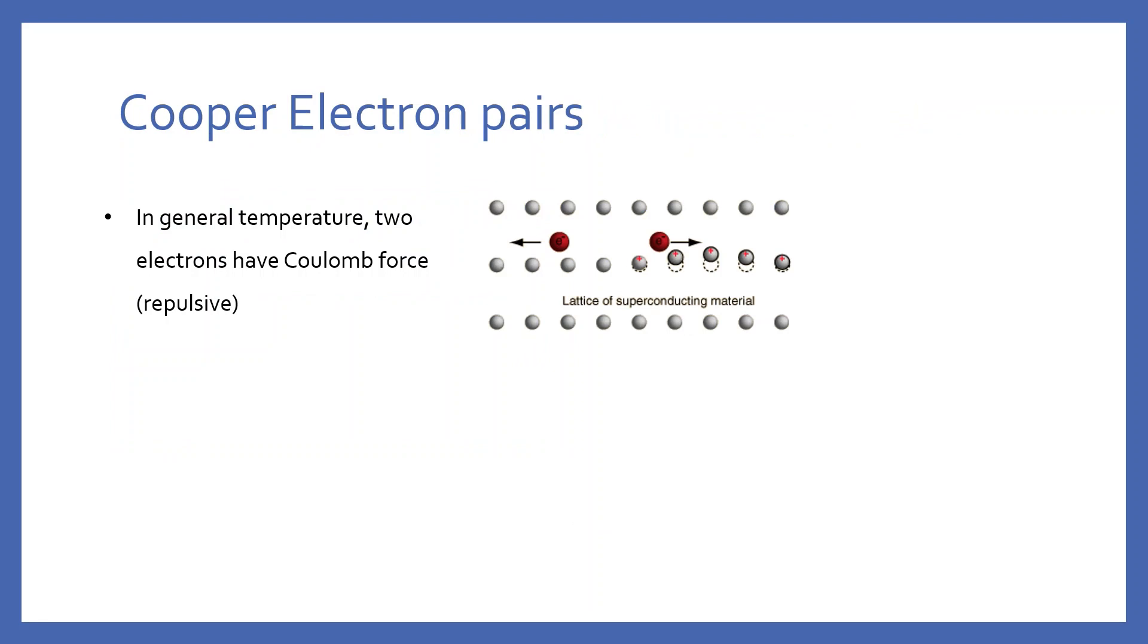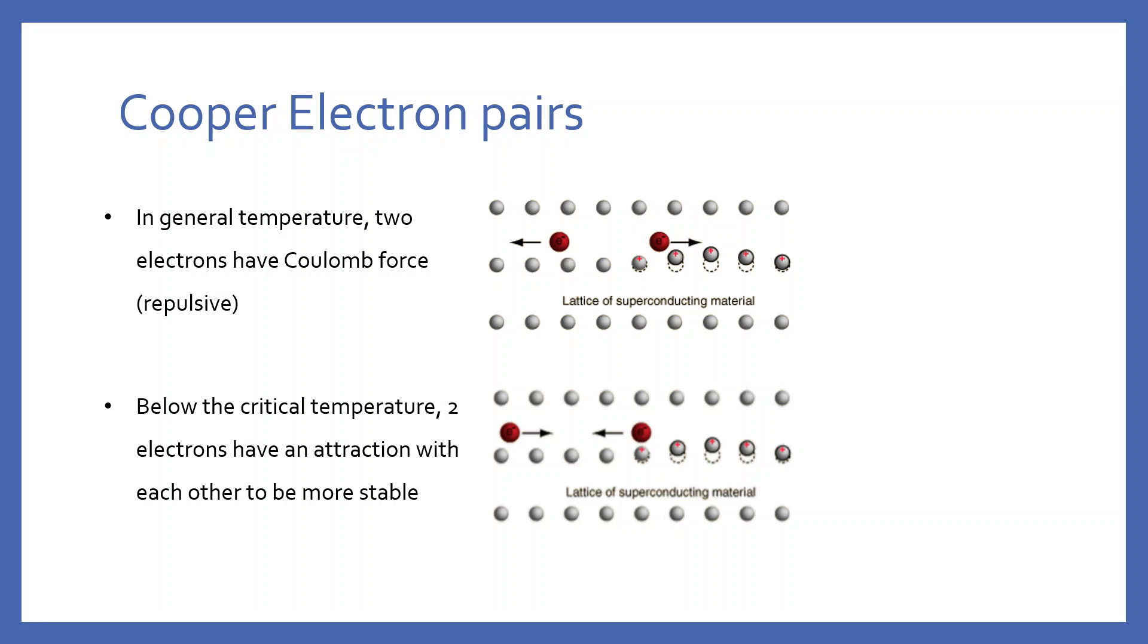The answer is Cooper pairs. In superconductors, when electrons pass, cations in the conductor are slightly attracted toward the moving electrons by the Coulomb electric force. Then other electrons can feel the cations moving, so they are attracted to the electrons that pass earlier, as if the electrons that pass first appear to have a positive charge.